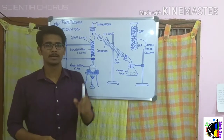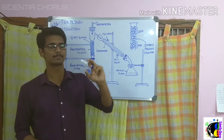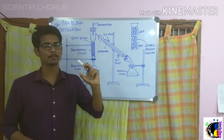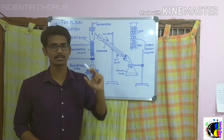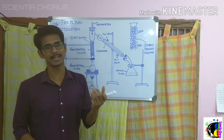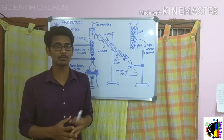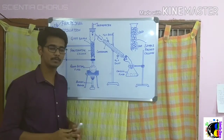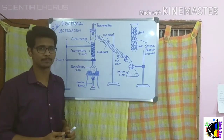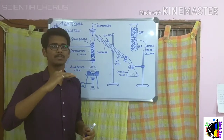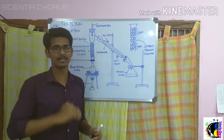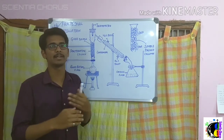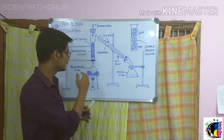Let us take an example using two components: ethanol and water. Ethanol's boiling point is 78 degrees Celsius and the boiling point of water is 100 degrees Celsius. We take this mixture of ethanol and water in a round bottom flask and heat it. When the temperature reaches 78 degrees Celsius, the ethanol gets vaporized and enters the gaseous state.